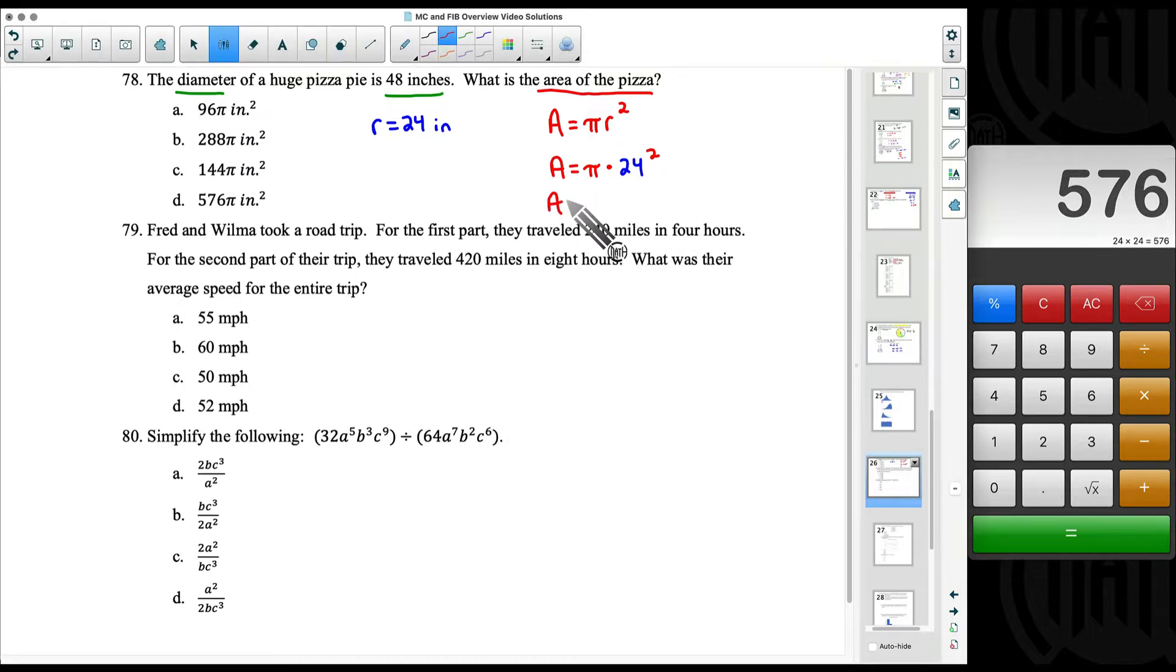24 squared, that's 24 times 24, not 24 times 2. Therefore our area is going to be pi times 576, as you can see over here. But I'm going to write the 576 in front, then we can put the pi after it. That means the same thing because we are multiplying here. Our answer is going to be D.